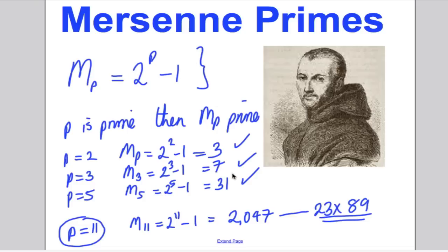Just because it was working in several cases was not sufficient as a proof that M_p was always prime. That's why in maths we need some formal, logical way of proving something is always true — not just that it looks to be true in most of the cases we check. And proof by induction is going to do that for us.